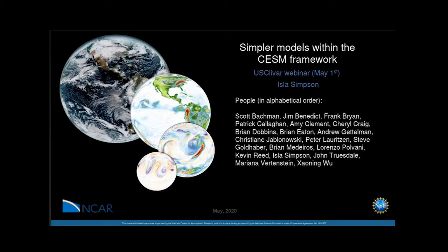She came to NCAR from Columbia University and Lamont Observatory, where she was a postdoc after being a postdoc at the University of Toronto and before that doing her PhD at Imperial College in London. Isla has a lot of research focus across a wide range of phenomena in the atmosphere, including work on mid-latitude storms and the variability in climate at scales ranging from planetary to regional.